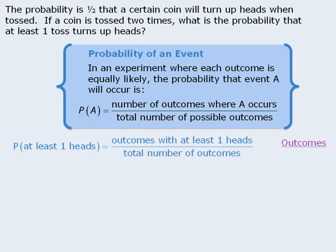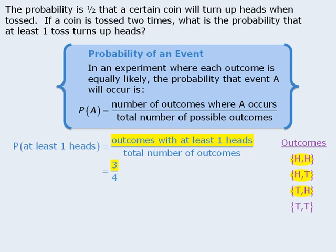In this case, it's easy to list the outcomes since there are only four: heads-heads, heads-tails, tails-heads, and tails-tails. Before we apply our formula, we should recognize its core limitation — it requires each outcome to be equally likely. Since the probability of getting heads equals the probability of getting tails, all outcomes are equally likely, so we can apply the formula. The denominator is four. Three of the four outcomes have at least one heads, so the numerator is three. The probability is three quarters that at least one toss will turn up heads. As you can see, this was probably the fastest approach.